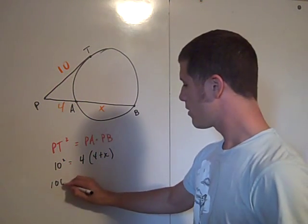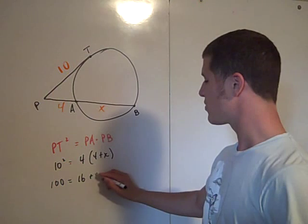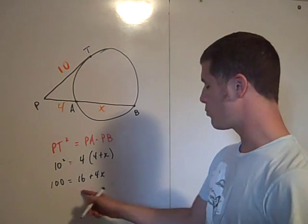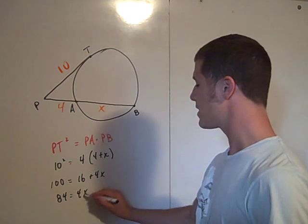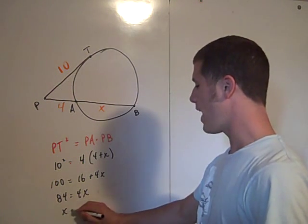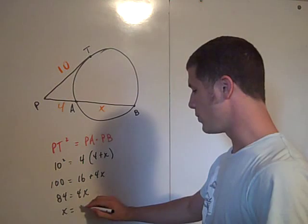So we have 100 equals 16 plus 4x. Subtract 16 from both sides, I've got 84 equal to 4x. Divide both sides by 4, I have x equals 21.